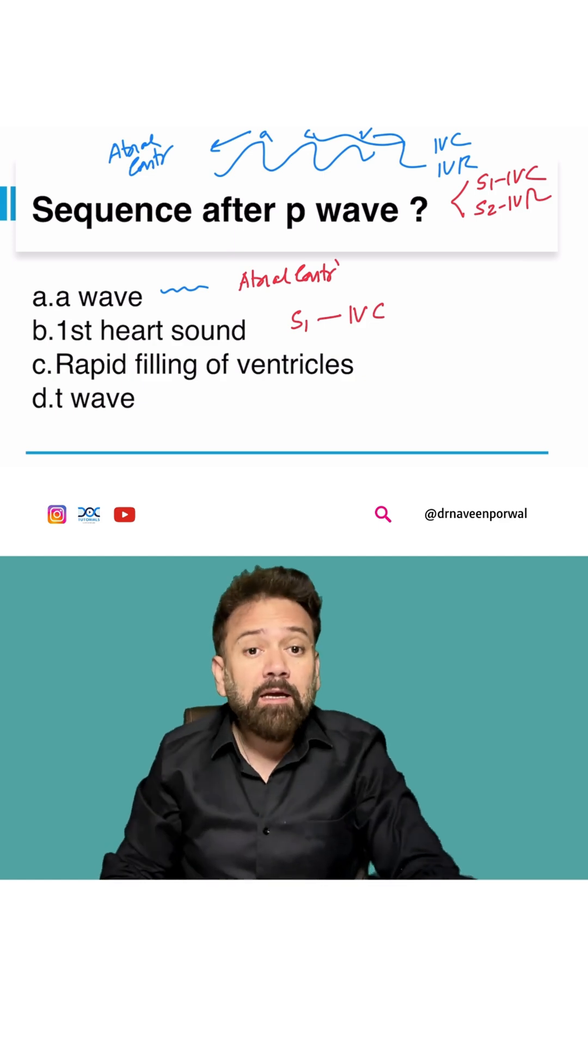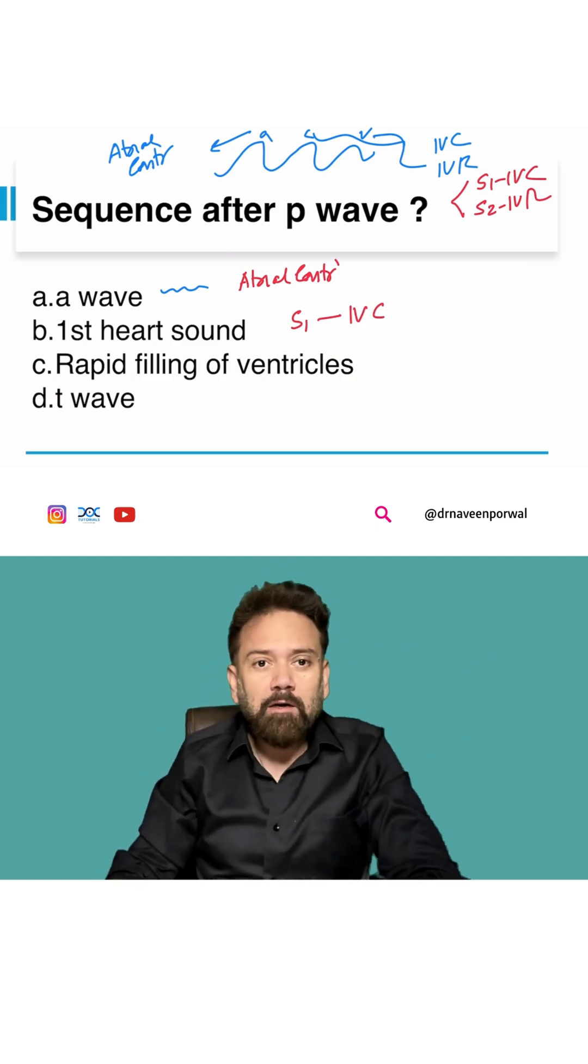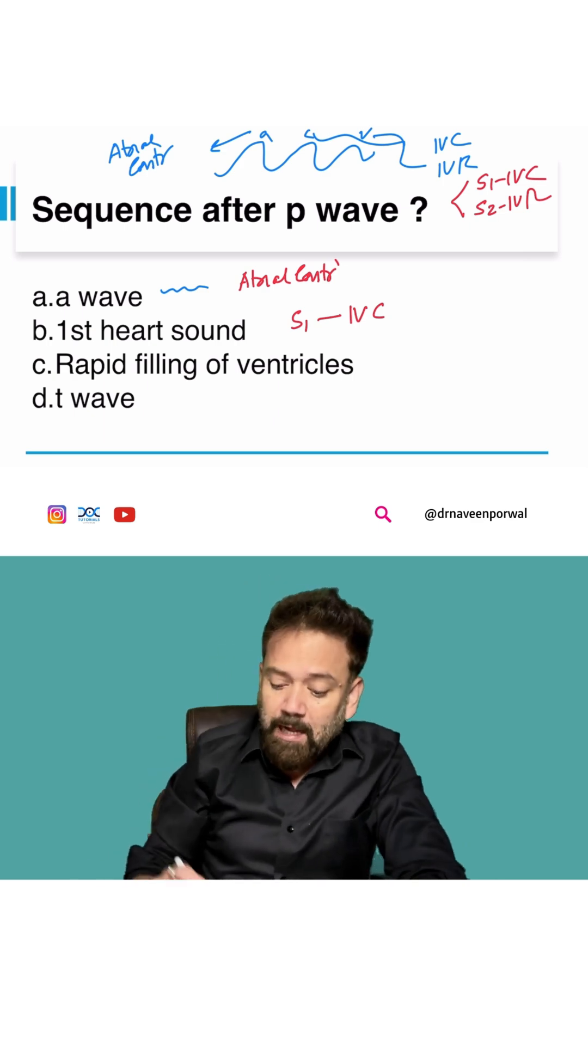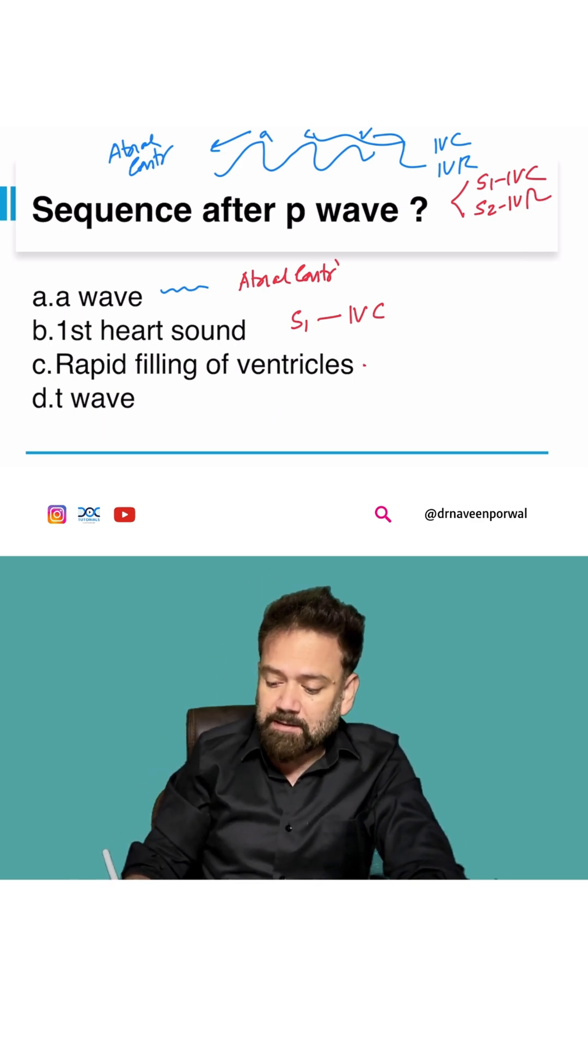So this is a universal truth. Rapid filling of the ventricles is telling you about the diastole. So first it is atrial contraction and then it is rapid filling.